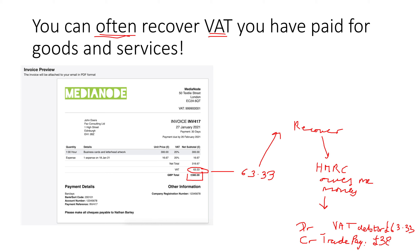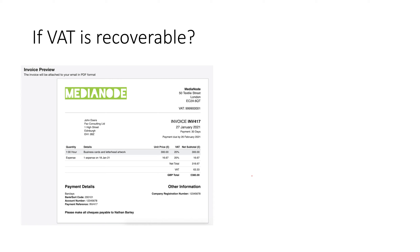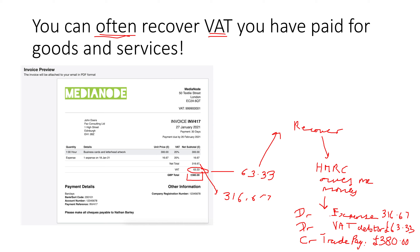My debits and credits don't balance yet because I haven't put through my actual expense. The expense is the net total: £316.67. So we can only record a debtor if the £63.33 is recoverable. To summarise: debit expense £316.67, debit VAT debtor £63.33, credit trade payables the full amount £380.